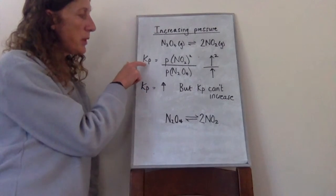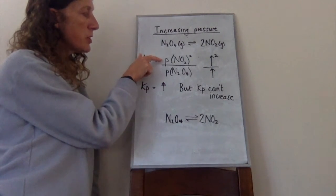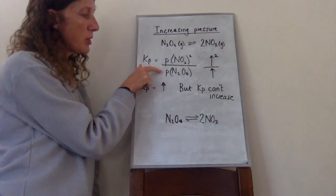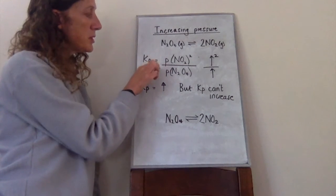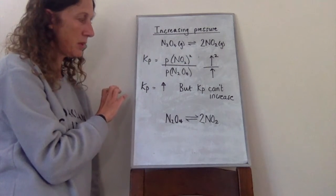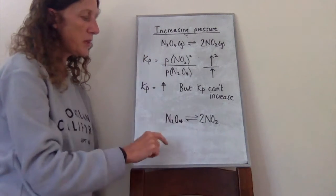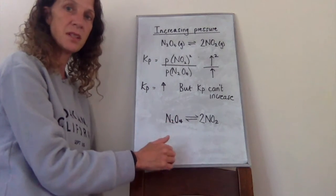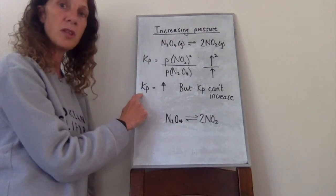Currently Kp is too high and needs to come down. For it to come down, the partial pressure of NO2 in the numerator needs to go down, and the partial pressure of N2O4 in the denominator needs to go up, so that one divided by the other gives a smaller figure back to the original value. For the partial pressure of NO2 to go down and N2O4 to go up, the equilibrium must shift to the left-hand side — and that is why it shifts to the side of fewest moles: to re-establish Kp at its original value.